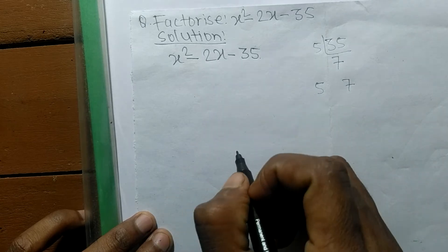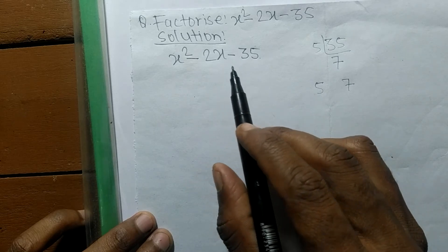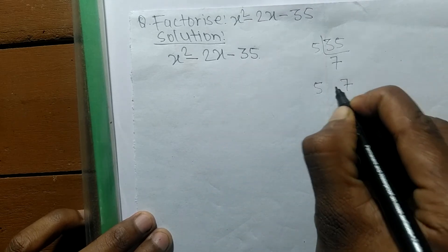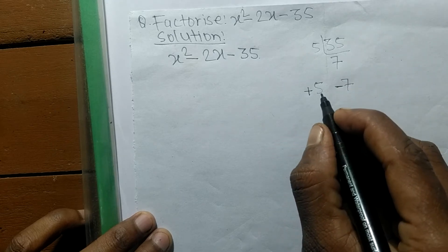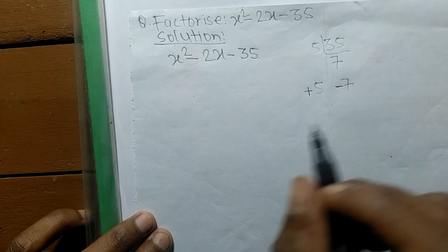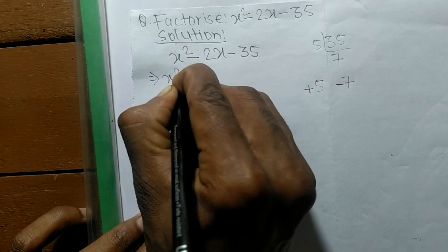So when we add 5 plus 7, we get 12. But when we add -7 plus 5, -7 plus 5 equals -2. So we can write it as x² plus 5x minus 7x minus 35.